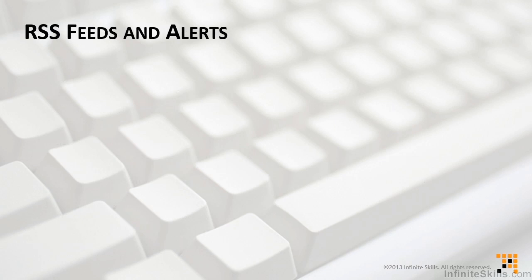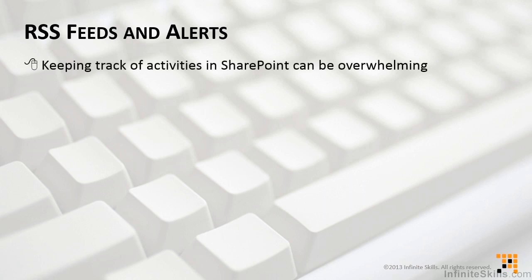So we know that we're going to have data in lists and libraries, but how do we monitor what's going on with those lists and libraries without having to go into every single list and library, which could be a very cumbersome and time-consuming process? The answer is RSS feeds and alerts. These two things help us keep track of activities in SharePoint, because keeping track of them on our own could be overwhelming, just because everything can be in so many different places.